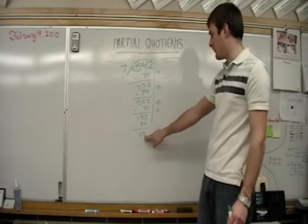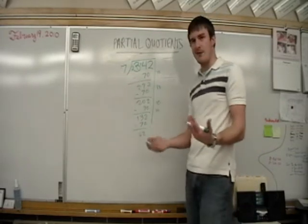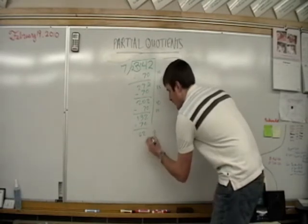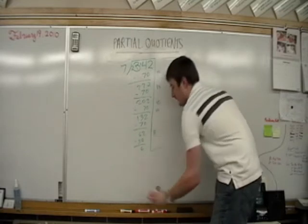How many times will 7 go into 62? Well, I know it's not 10. Let's try one less. 7 times 9, that's 63. Not quite. Well, 7 times 8, that's 56. And we are left with 6.